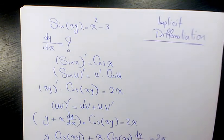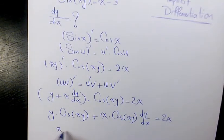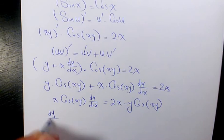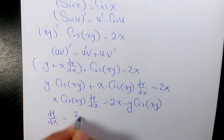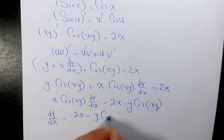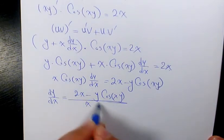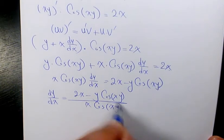Then you can say x cosine xy dy over dx equals 2x minus y cosine xy. So dy over dx equals 2x minus y cosine xy divided by x cosine xy.